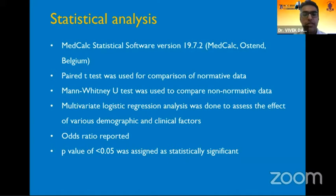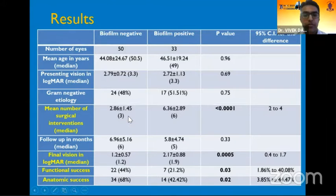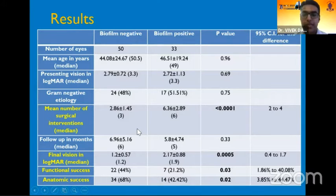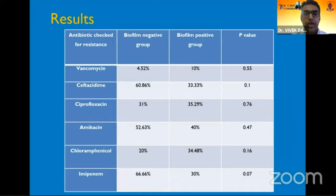Looking at the results table, the standout features were that the biofilm negative group required much fewer mean number of surgical interventions compared to the biofilm positive group. Also, the final LogMAR visual acuity, the final functional success, and the final anatomic success were much better in the biofilm negative group compared to the biofilm positive group. Looking across etiologies, the spread of various etiologies causing endophthalmitis across the two groups was noted. The commonly used antibiotics and their resistance were also comparable across the two groups.